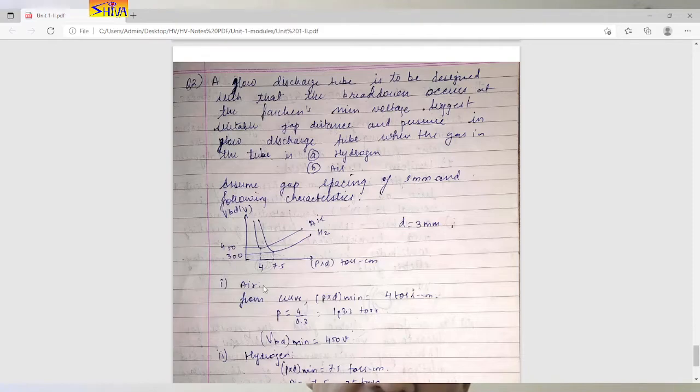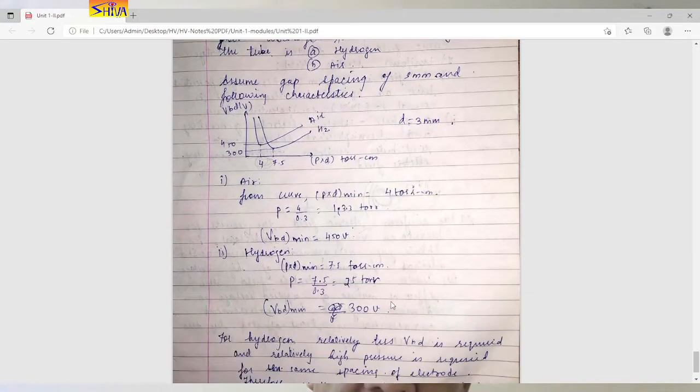Now if you replace air by hydrogen, this is the characteristic. Vb minimum is 300 volts and p into d minimum is 7.5. So hydrogen p into d minimum is 7.5 torr centimeter. Substitute value of d that is 0.3, so we get pressure of 25 torr and Vb minimum is 300 volts.